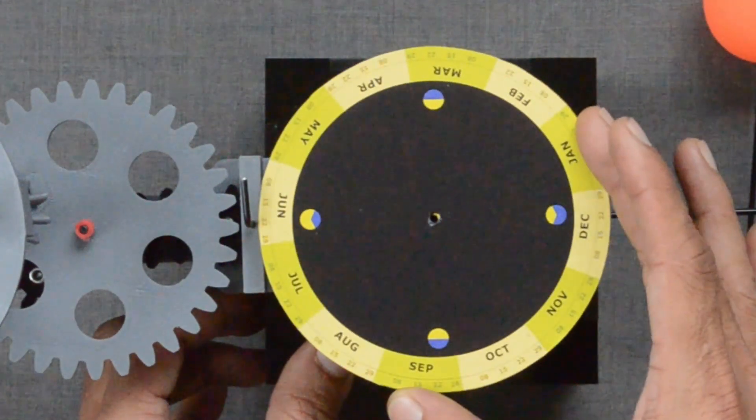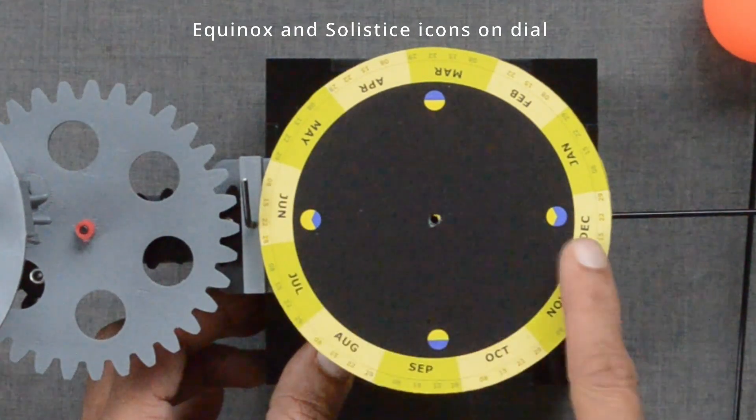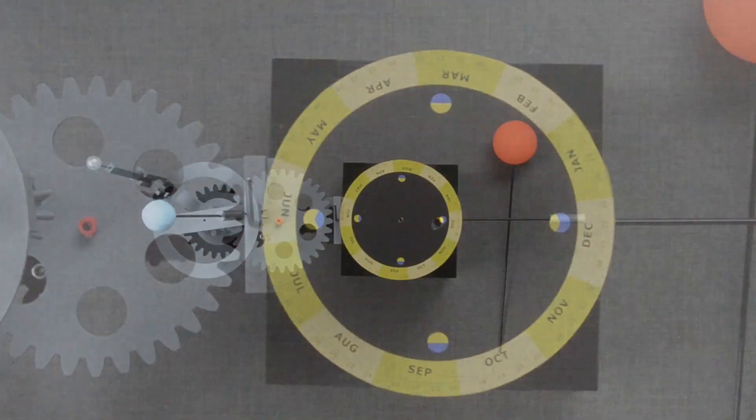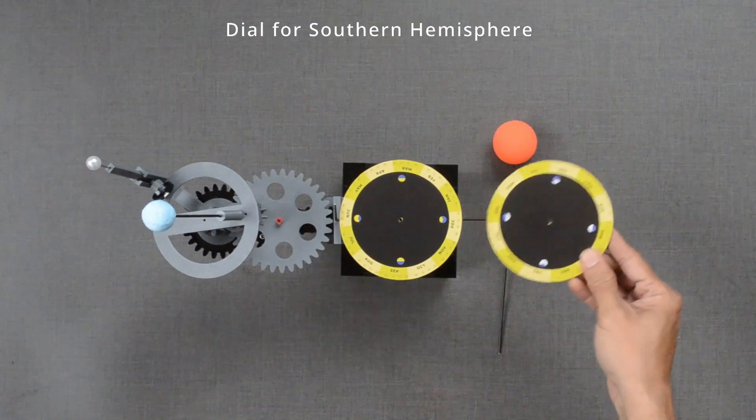Icons for Solstice and Equinox are also marked. This is true for Northern Hemisphere. For the Southern Hemisphere, there is another dial.